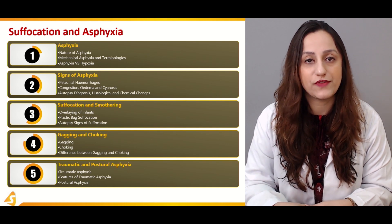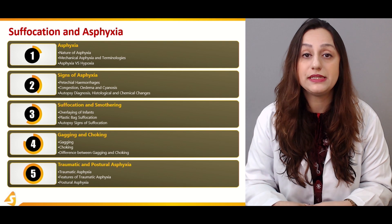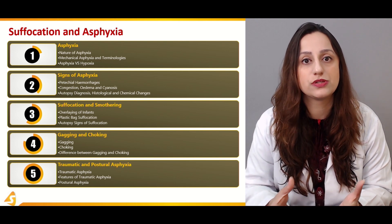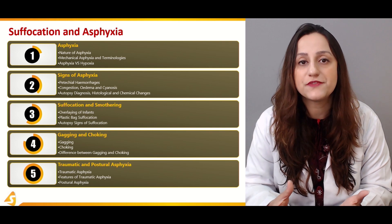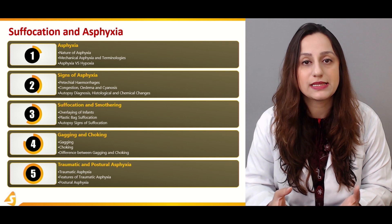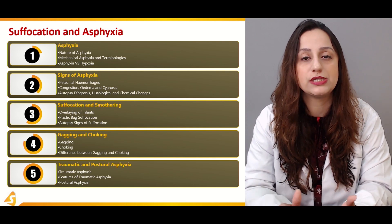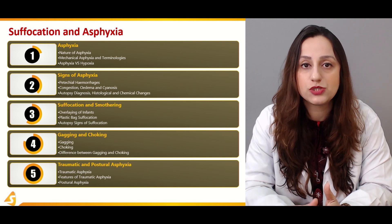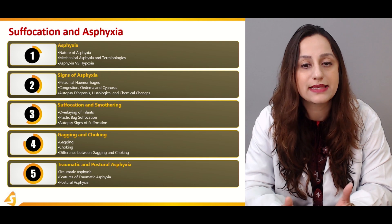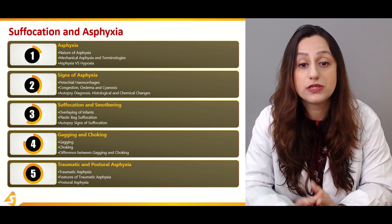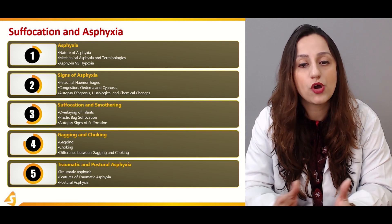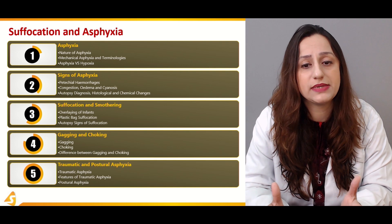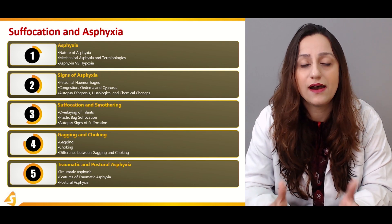In the second section we'll be dealing with the signs of asphyxia, the most important being petechial hemorrhages. Then we'll deal with congestion, edema, and cyanosis — the clinical signs observed by pathologists in asphyxial deaths — their definitions and how to diagnose these conditions. The autopsy findings particular to asphyxial deaths, histological findings, and chemical changes found in the blood and their significance are all discussed in this second section.